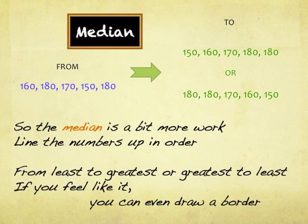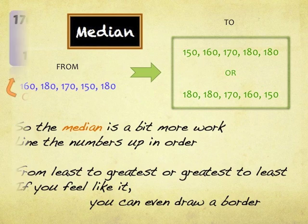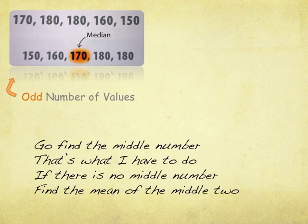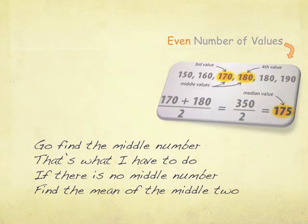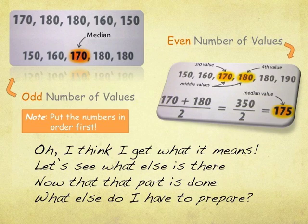What else do I have to prepare? So the median is a bit more work — line the numbers up in order, least to greatest or greatest to least if you feel like it. Go find the middle number, that's what I have to do. If there's no middle number, find the mean of the middle two. Oh, I think I get what it means.